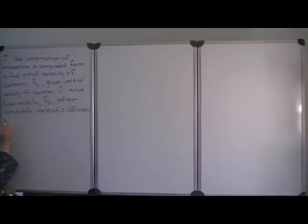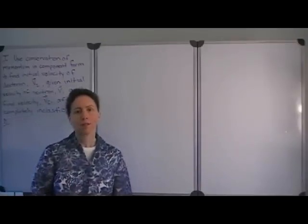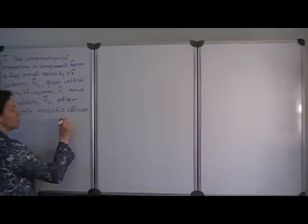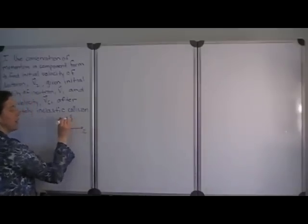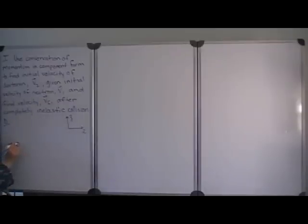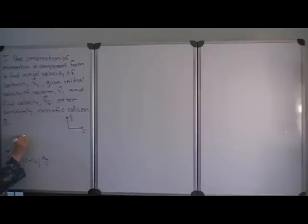As we develop this problem, we need to choose a coordinate system because we're dealing in more than one dimension. Our velocities are given to us in unit vector form. So let's choose the I direction to be positive to the right and the J direction to be positive up. We start with the neutron — mass 1 — which has a mass of 1 atomic unit. We're told that its initial velocity is 27 in the I direction and 16 in the J direction, with units of megameters per second. So it has a larger I component than J component.